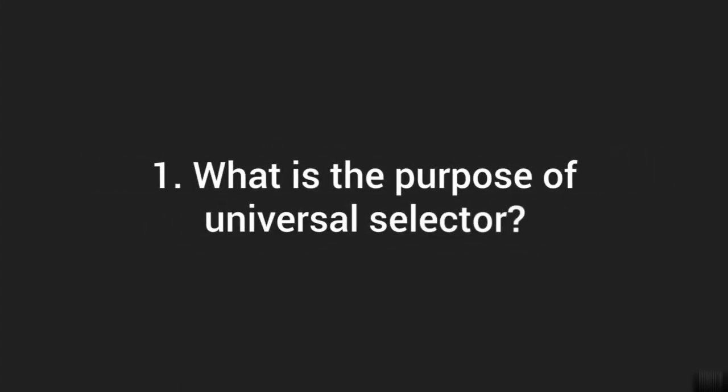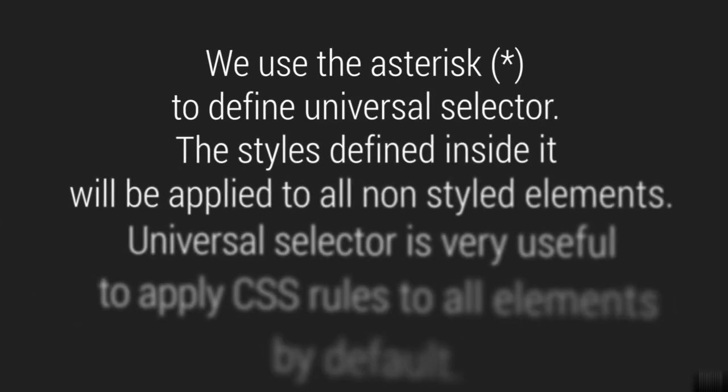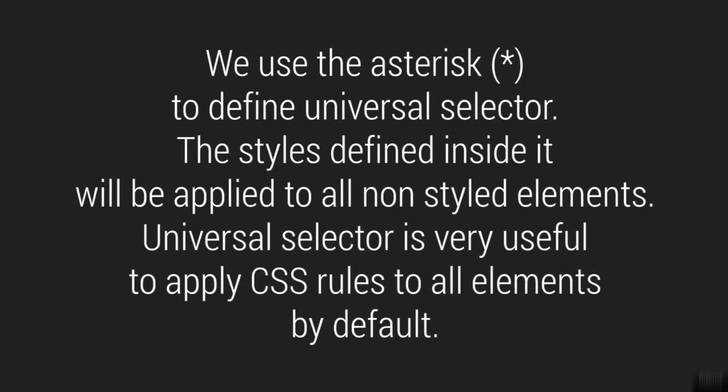So what is the purpose of the universal selector? We use the asterisk and define the styling. Whatever styling you define with the universal selector is generally a set of styles you want to apply when there is no other styling applied. In a webpage, we generally see a few padding or margin settings for all elements by default that you want to apply — in such cases the universal selector is also very useful.